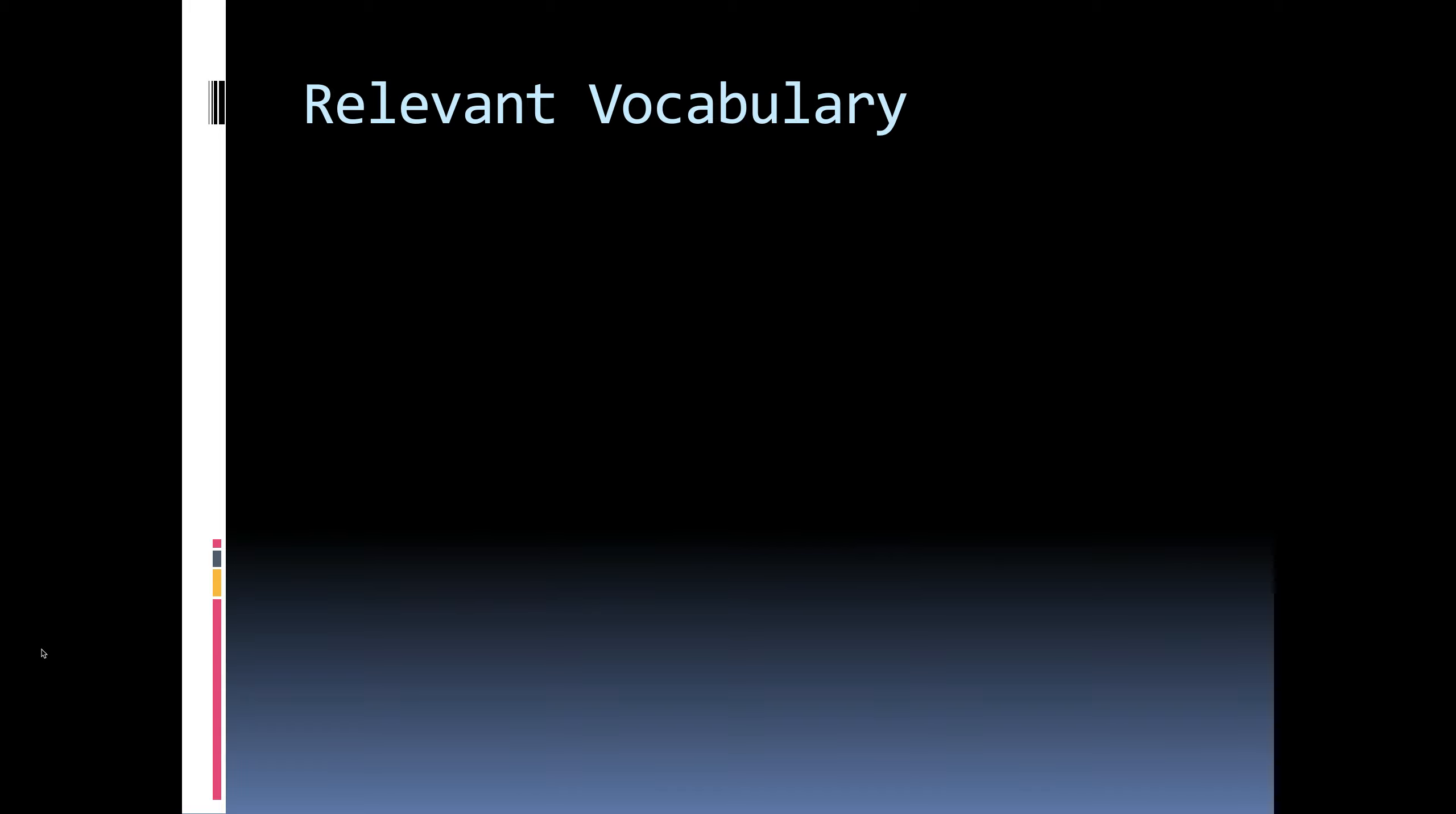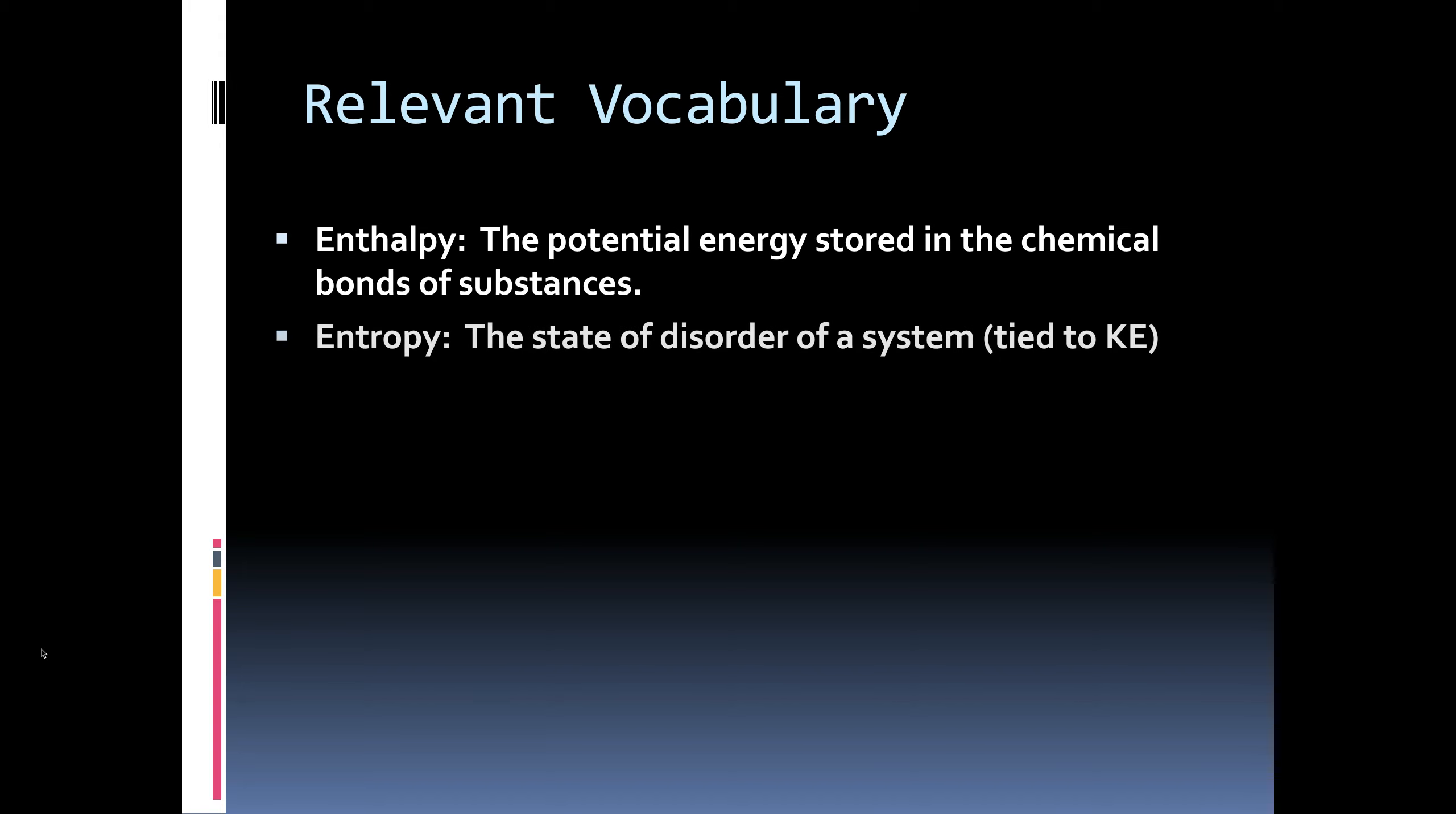So the relevant vocabulary for today, enthalpy, the potential energy stored in the chemical bonds of substances. Entropy, the state of disorder of a system. Now, this is tied to how fast the molecules are moving. So it's going to be tied directly to temperature, kinetic energy.